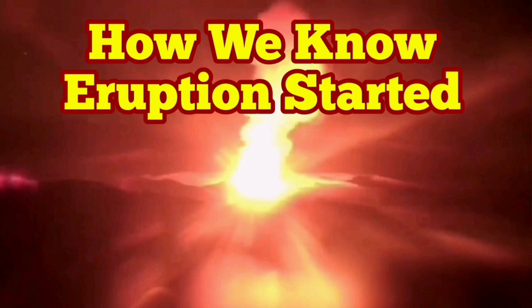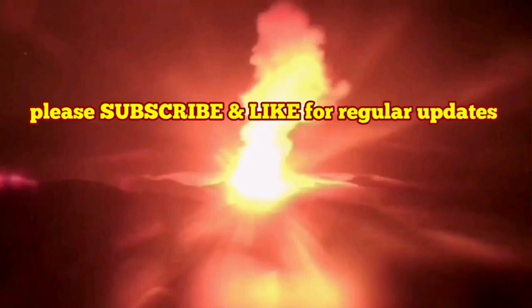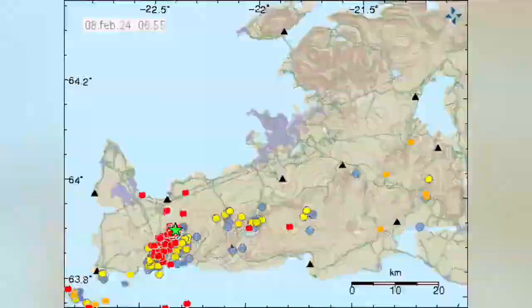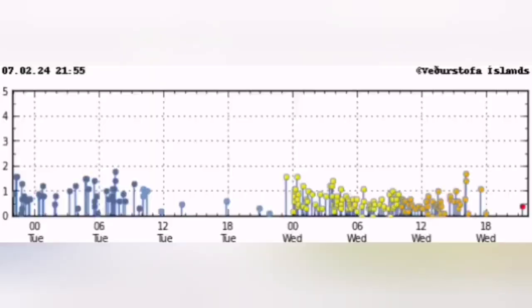How do we know the eruption has started? This is the Reykjanes Peninsula and this is the Svartsengi volcanic system that we are talking about. You see a cluster of earthquakes appearing concentrated in a certain area, in this case near the Svartsengi volcanic system.